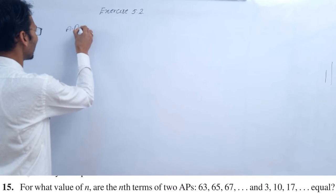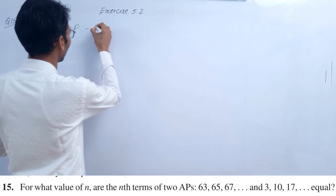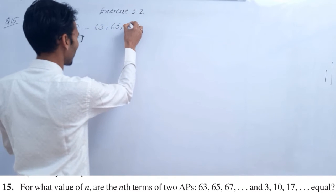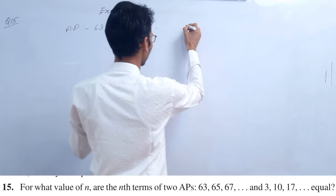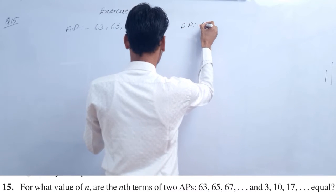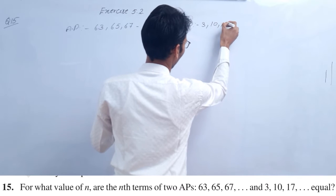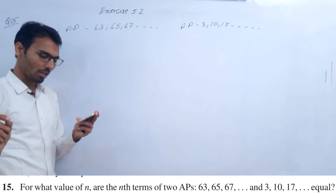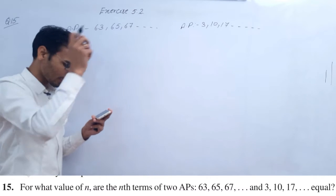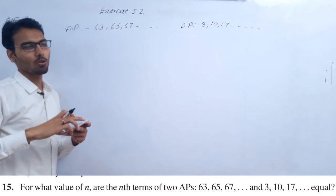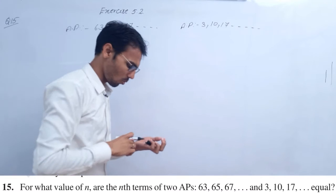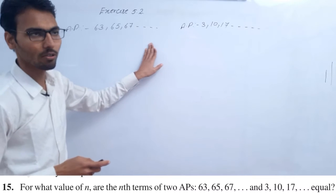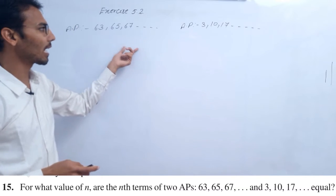The first AP is 63, 65, 67 and so on, and the second AP is 3, 10, 17 and so on. For what value of n are the nth terms of these two APs equal? We need to find which value of n makes the nth terms equal.